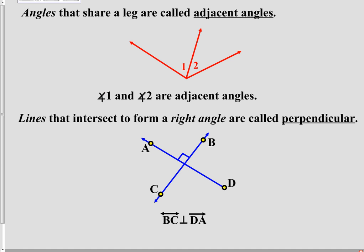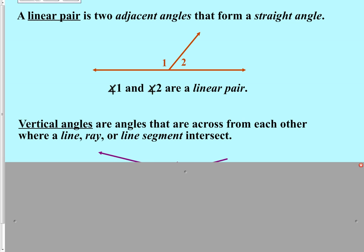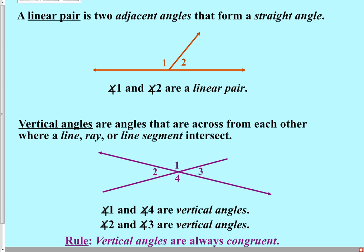The term adjacent is one some students still struggle with — adjacent angles simply share a leg with each other. Perpendicular means two lines, rays, or line segments intersect and form a right angle; the symbol is an upside-down capital T. Linear pair are adjacent angles where the other legs of those two angles form a straight angle — an important definition that test writers love to include because students tend not to learn it.